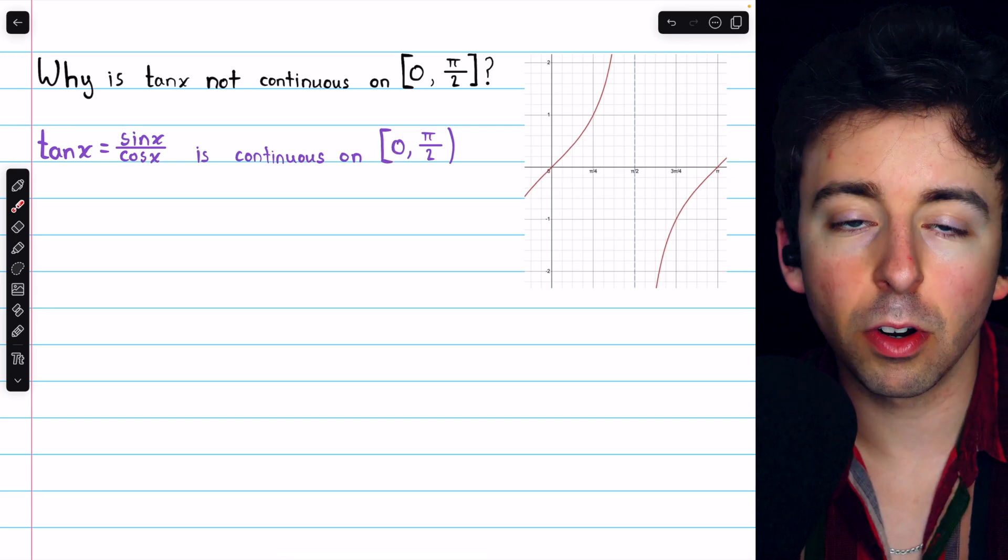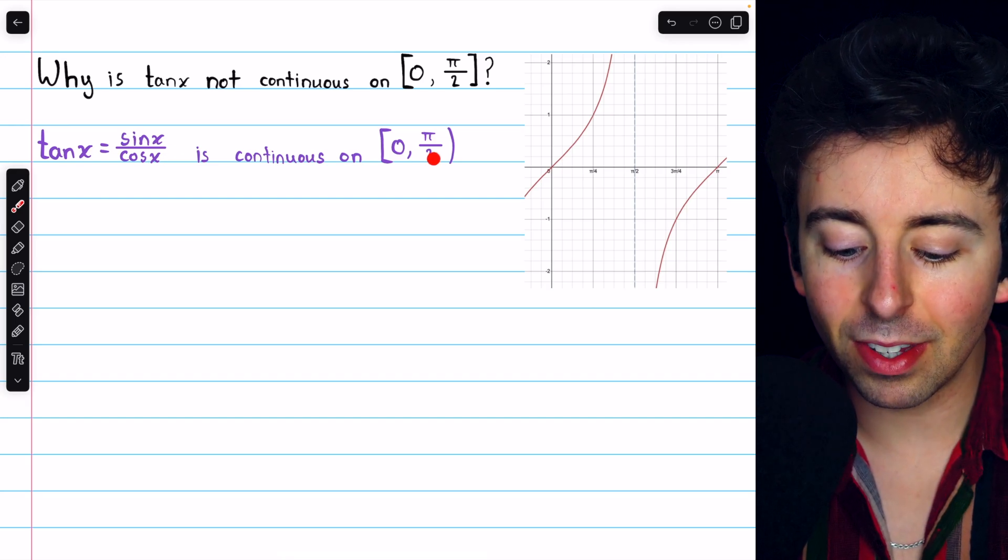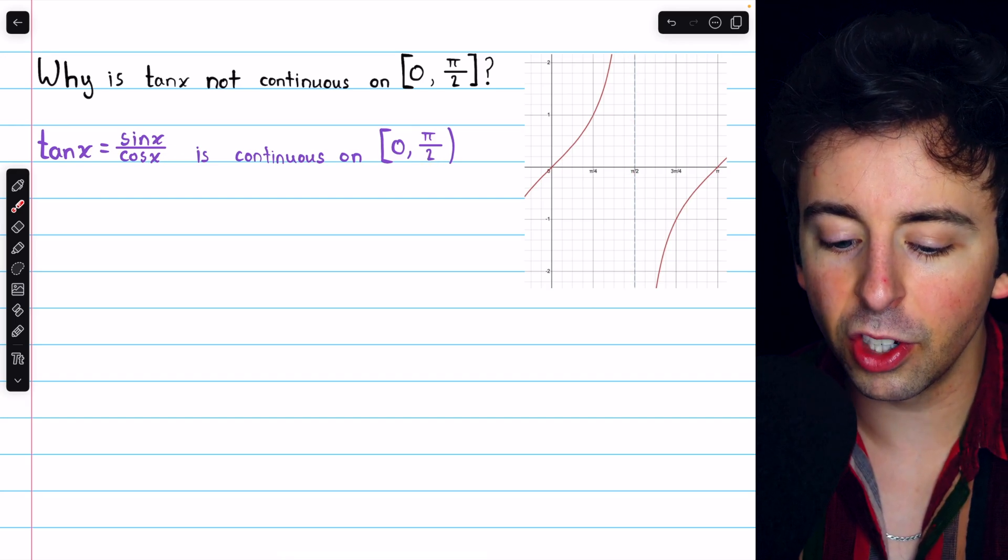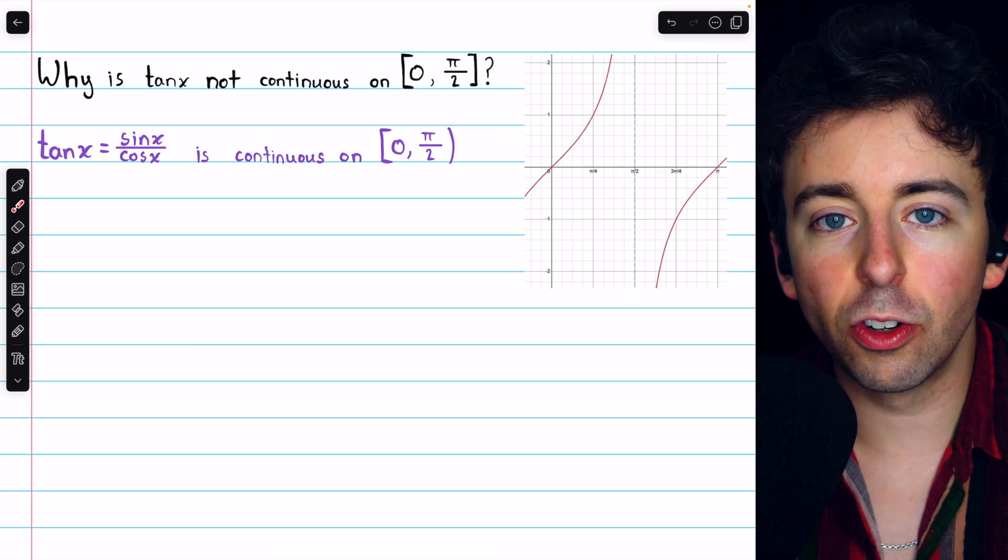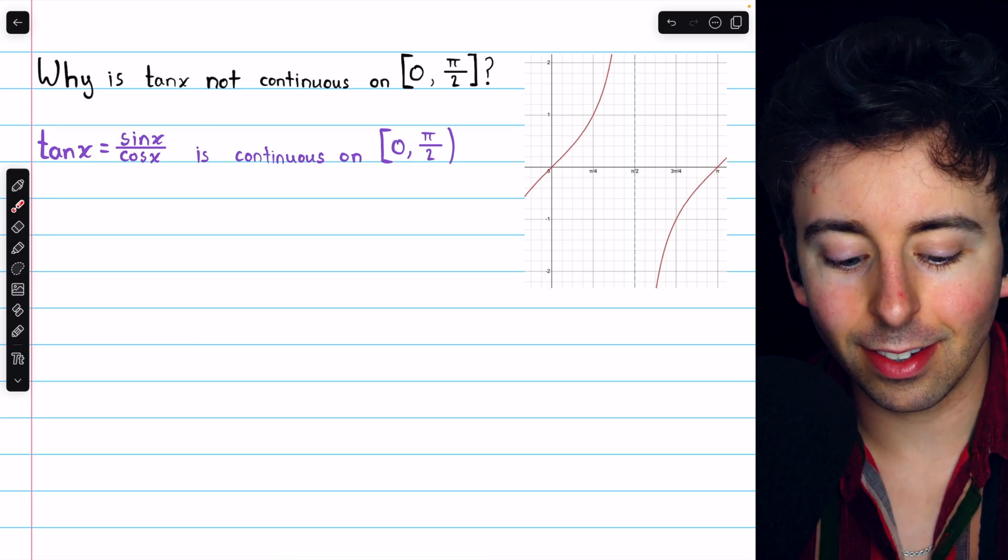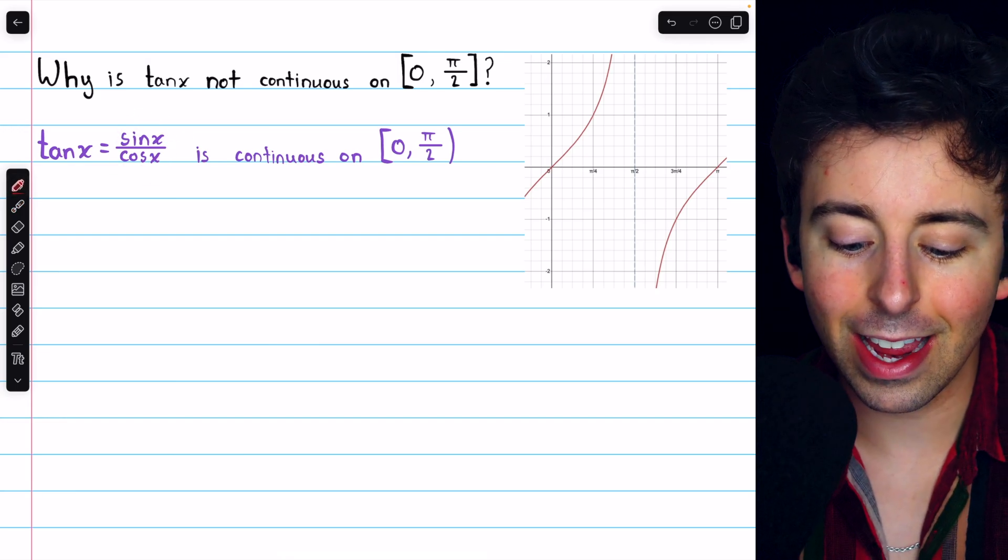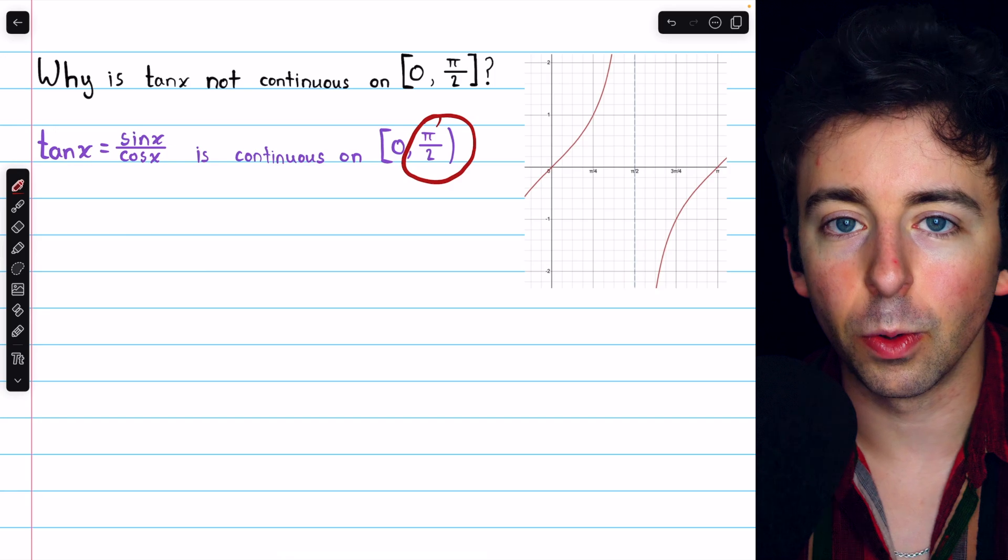At 0, for example, there's no problem, tangent of 0 is 0. But it's specifically at pi over 2 where we encounter the issue with continuity. And when you understand that tan x is sine x divided by cosine x, that should shed some light on why pi over 2 is a problem.